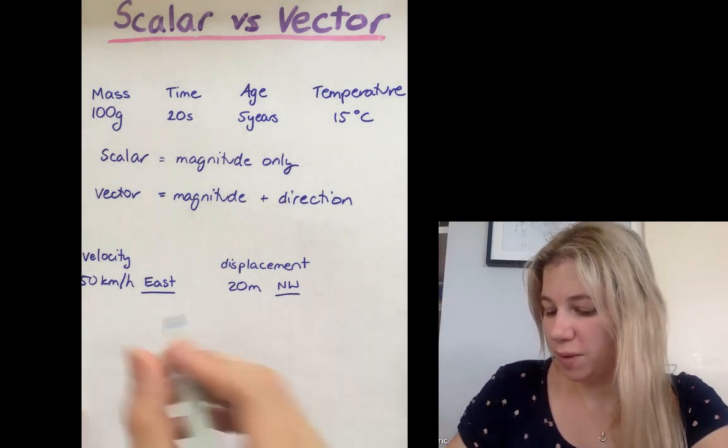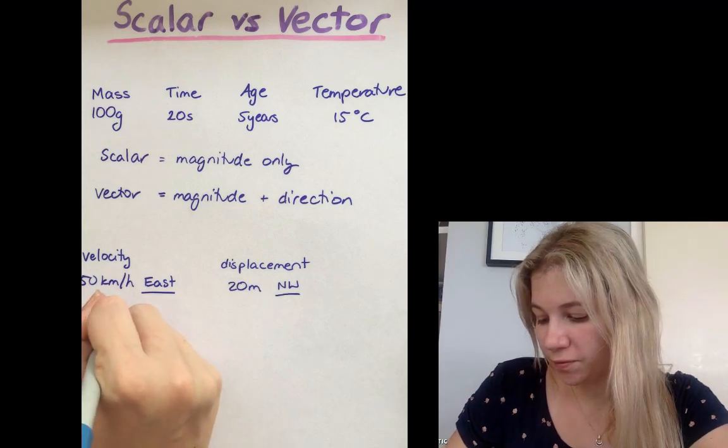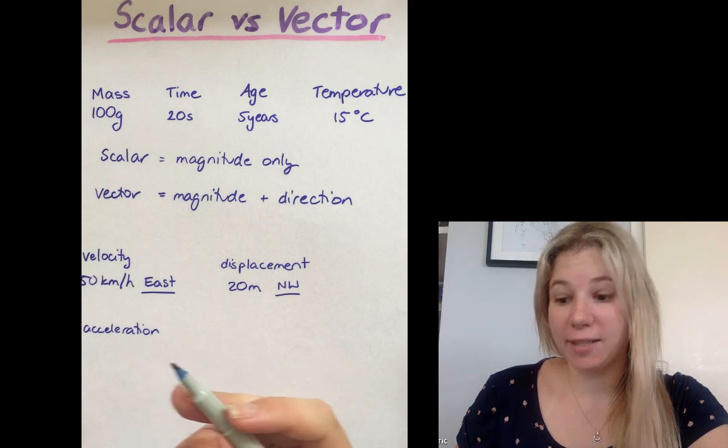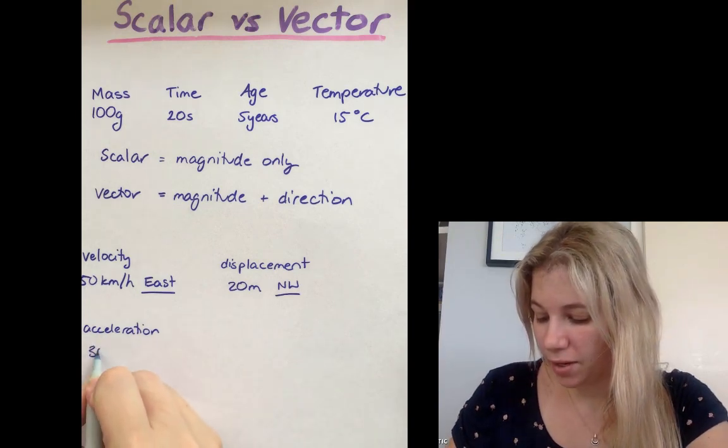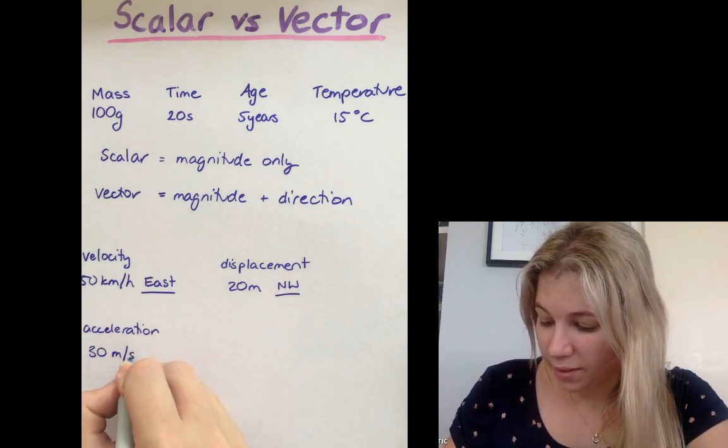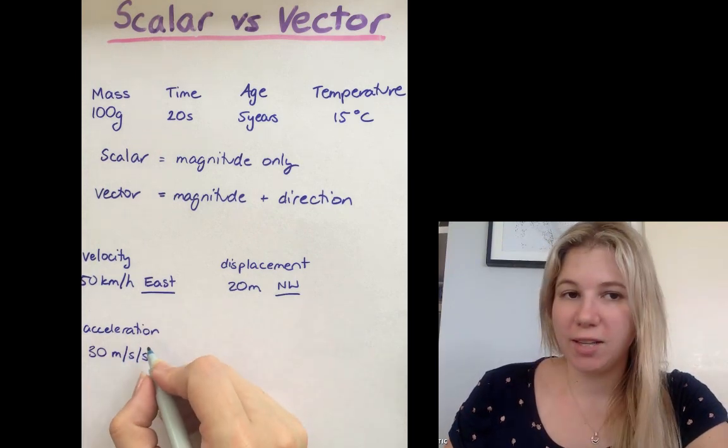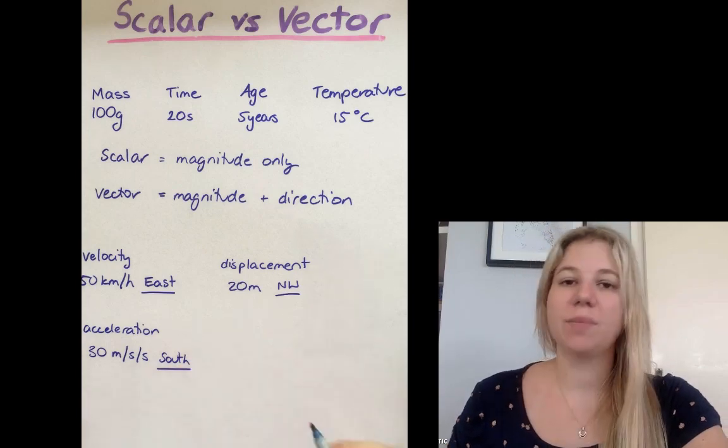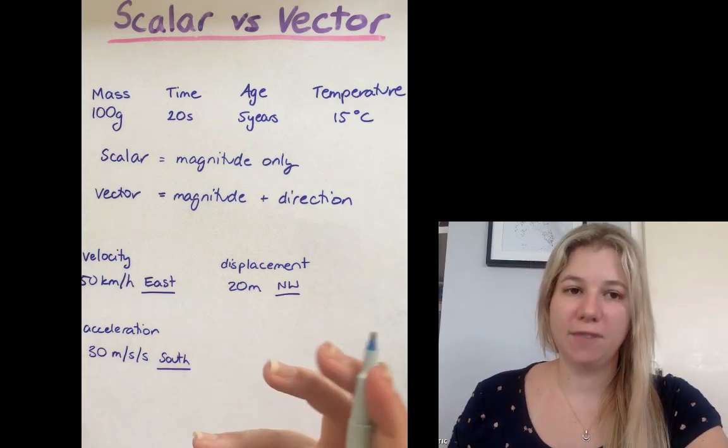One more example would be acceleration. Let's say that a car accelerated at 30 meters per second per second and it was traveling in the direction of south. Now because it's got a direction, that makes it a vector quantity.